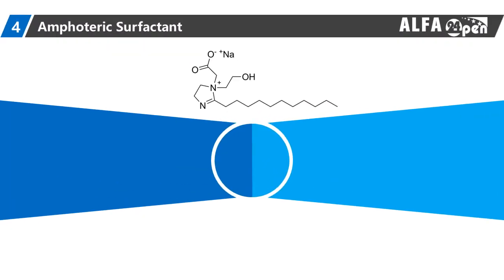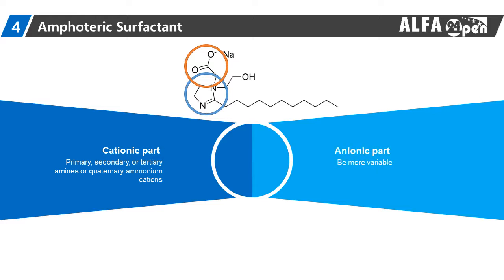Amphoteric surfactants have both cationic and anionic centers attached to the same molecule. The cationic part is based on primary, secondary, or tertiary amines or quaternary ammonium cations. The anionic part can be more variable.